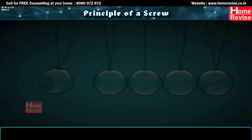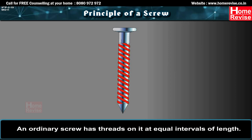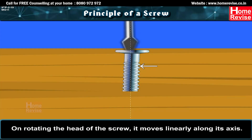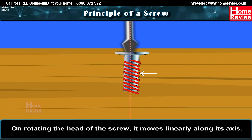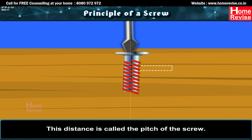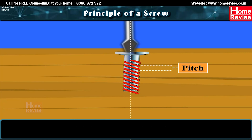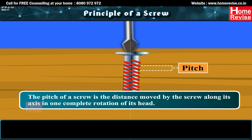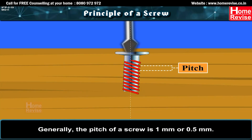Principle of a Screw: An ordinary screw has threads at equal intervals. On rotating the head, it moves linearly along its axis. The linear distance moved in one complete rotation equals the distance between two consecutive threads, called the Pitch of the Screw. Generally, the pitch of a screw is 1 mm or 0.5 mm.